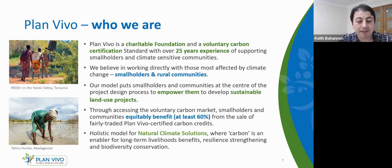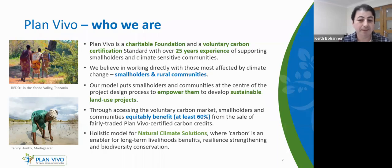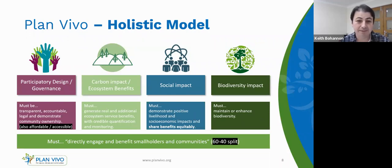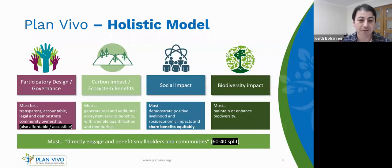One of our key values is equitable benefit sharing — it's really important that communities can access the voluntary carbon market and that carbon finance flows back to them. At least 60% of that benefit must go back to communities. Another USP from Plan Vivo is our holistic model for natural climate solutions. Yes, we're a carbon standard certifying real, additional, and verifiable carbon benefits, but alongside that we ensure long-term social and livelihood benefits, resilience strengthening, and biodiversity conservation. We measure impact not just in tons of CO2 reductions, but in number of people reached and hectares under sustainable land management.